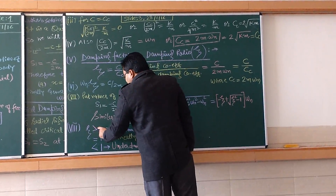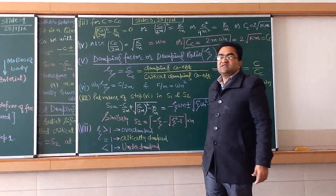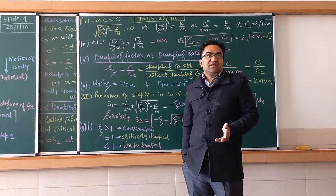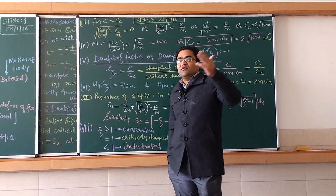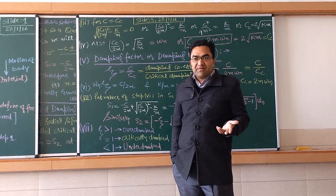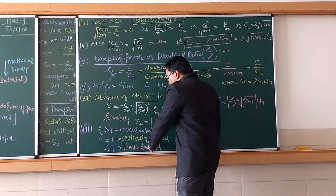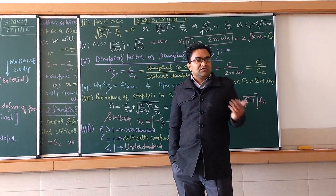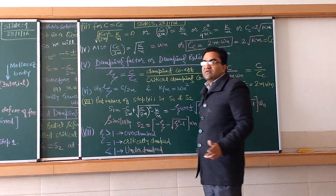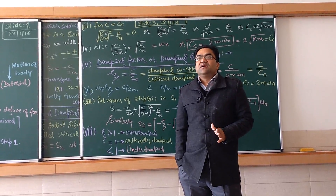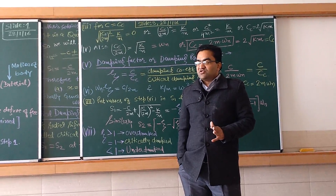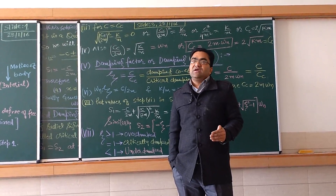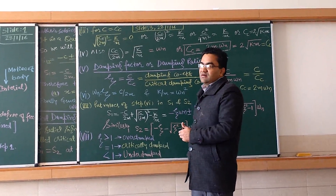Overdamped means you have more damping than needed — for example, putting a truck shock absorber in a car. Critically damped is the optimal damping — exactly as much as you need. Underdamped means you have less damping than needed — like putting a car shock absorber in a truck. These three cases will be discussed in detail with full derivations in our next lecture. Thank you very much.